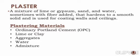So what is actually a plaster and its composition? A mixture of lime or gypsum, sand and water, sometimes with fibre added, that hardens to a smooth solid and is used for coating walls and ceilings.